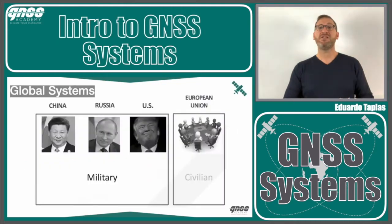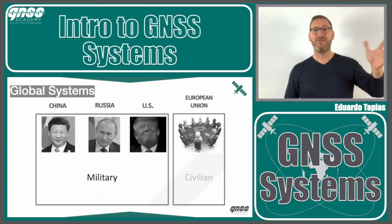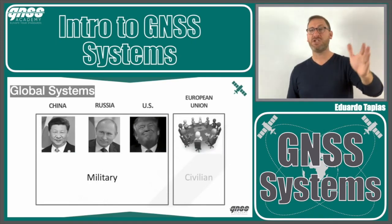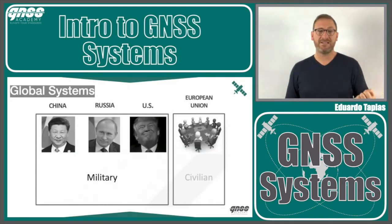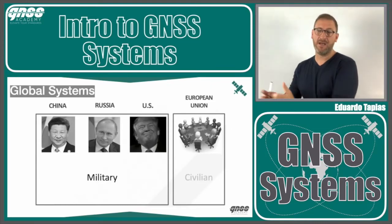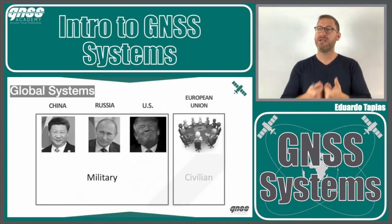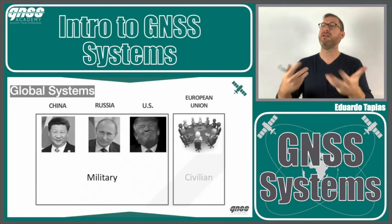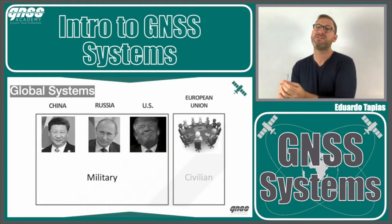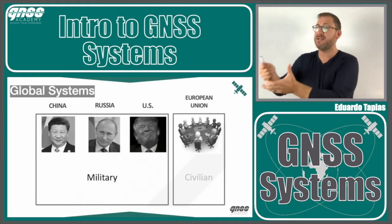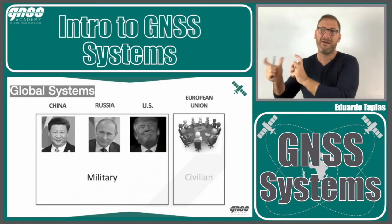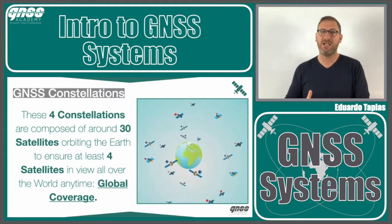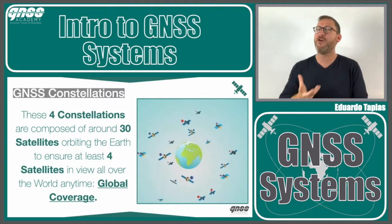The main difference is their origin. The first three constellations — from China, Russia, and the United States — were built primarily for military purposes, even though they also have civilian uses. In the European Union, Galileo was designed as a civilian system, though it does include the PRS service for military or governmental purposes.